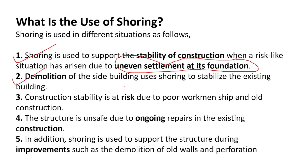When demolishing a building next to an existing one, shoring is provided to keep the existing building safe. The third reason is when the stability of a structure is at risk due to poor workmanship or old construction — shoring is provided in those cases as well.